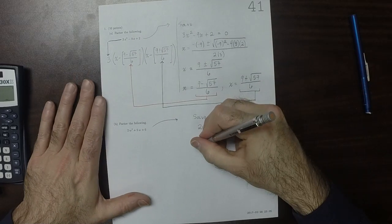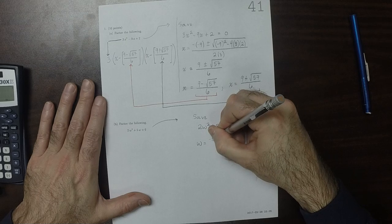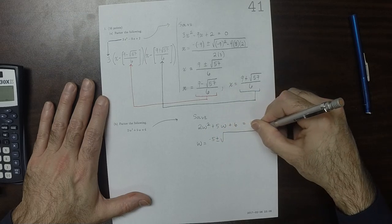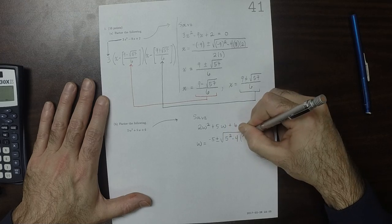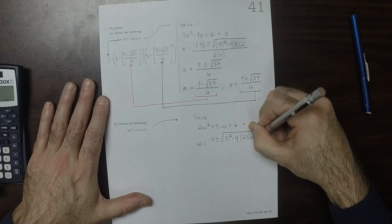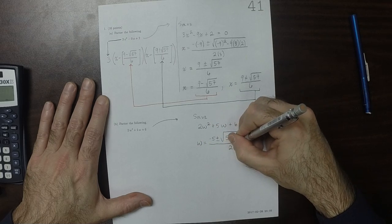So the solution should be w is negative 5 plus or minus the square root of 5 squared minus 4 times 2 times 6, all of this divided by 2 times 2.